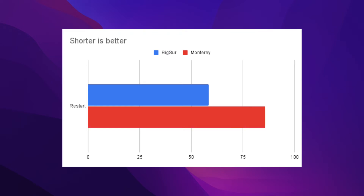Looking at the restart time of the operating system itself: Big Sur generally took 58.41 seconds, and in Monterey it took 1.26 minutes. Restart was done when all applications were closed, and time was recorded from confirming the restart button until the login window is displayed.